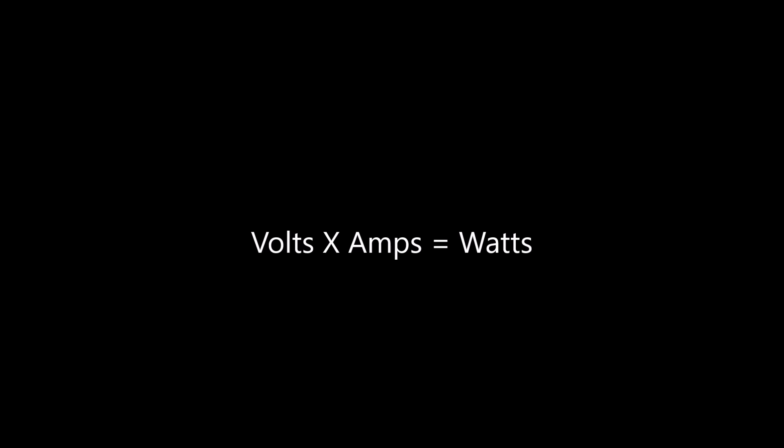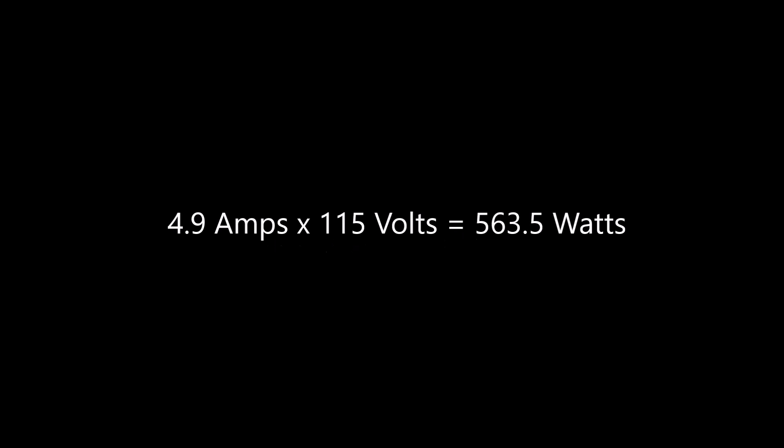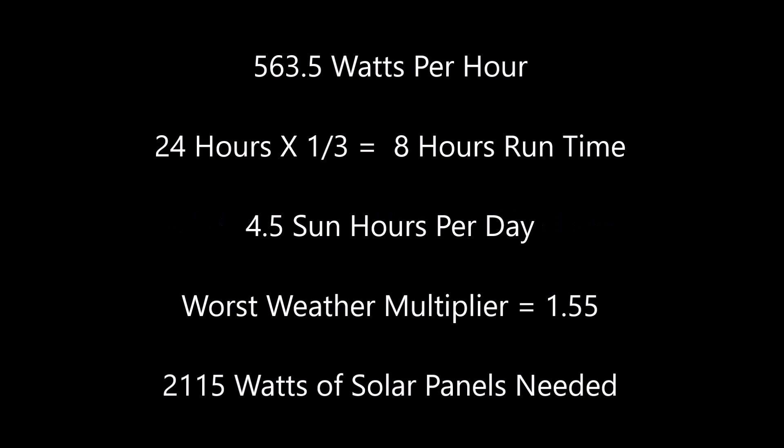The first thing we need to figure out is how many watts per hour we are going to use. This air conditioner uses 4.9 amps at 115 volts for a total of 563.5 watts. We also need to look at how long this air conditioner is going to run — we already made the assumption that it runs one-third of the day, which is eight hours.